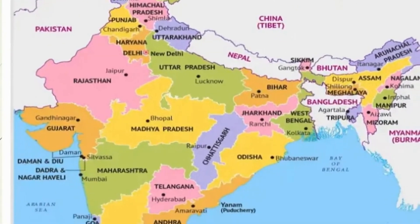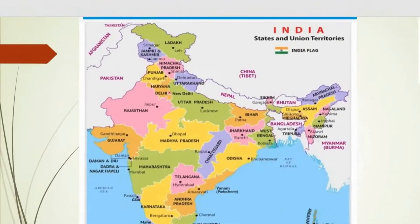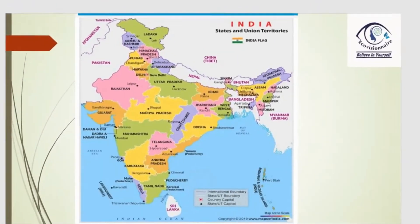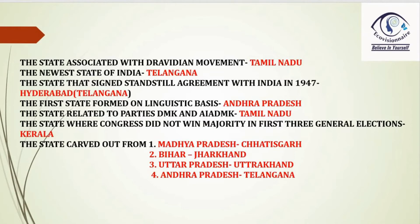Now let us see the most expected questions asked in board examinations. The state associated with the Dravidian movement is Tamil Nadu. The newest state in India is Telangana. The state that signed a standstill agreement with India in 1947 is Hyderabad, which is Telangana now. The first state formed on linguistic basis is Andhra Pradesh. The state related to DMK and AIADMK is Tamil Nadu. The state where Congress did not win majority in the first three general elections is Kerala.